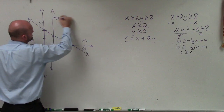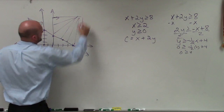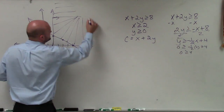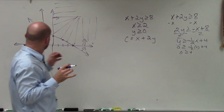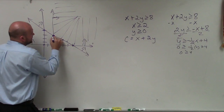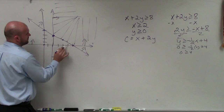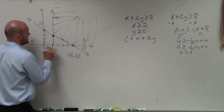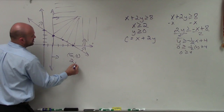You can see that my feasible region is going to be all this area, continually going up and continually going over. There are actually only two vertices: the first is at (6, 0), and the second is at (2, 3).